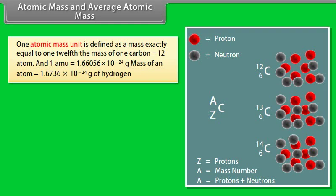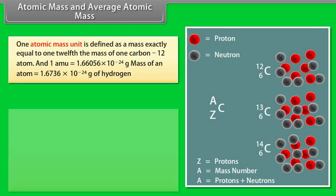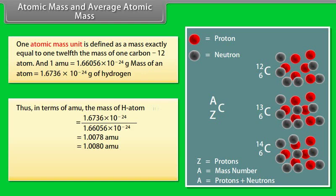Atomic Mass and Average Atomic Mass. One atomic mass unit (amu) is defined as a mass exactly equal to one-twelfth the mass of one carbon-12 atom, where 1 amu = 1.66056 × 10⁻²⁴ grams. The mass of a hydrogen atom is 1.6736 × 10⁻²⁴ grams, which in terms of amu equals 1.6736 × 10⁻²⁴ divided by 1.66056 × 10⁻²⁴, giving 1.0078 amu, approximately 1.0080 amu.